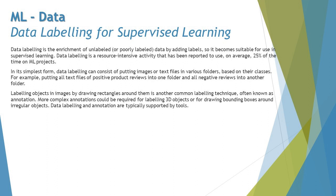Data labeling is the most formal way of using data for ML training. Data labeling is the enrichment of unlabeled or poorly labeled data by adding labels to it, making it more suitable for use in supervised learning. Data labeling is a resource-intensive activity, reported to use on average 25 percent of the time on ML projects, because it allows you to classify and categorize data and know exactly how to feed and train the model.